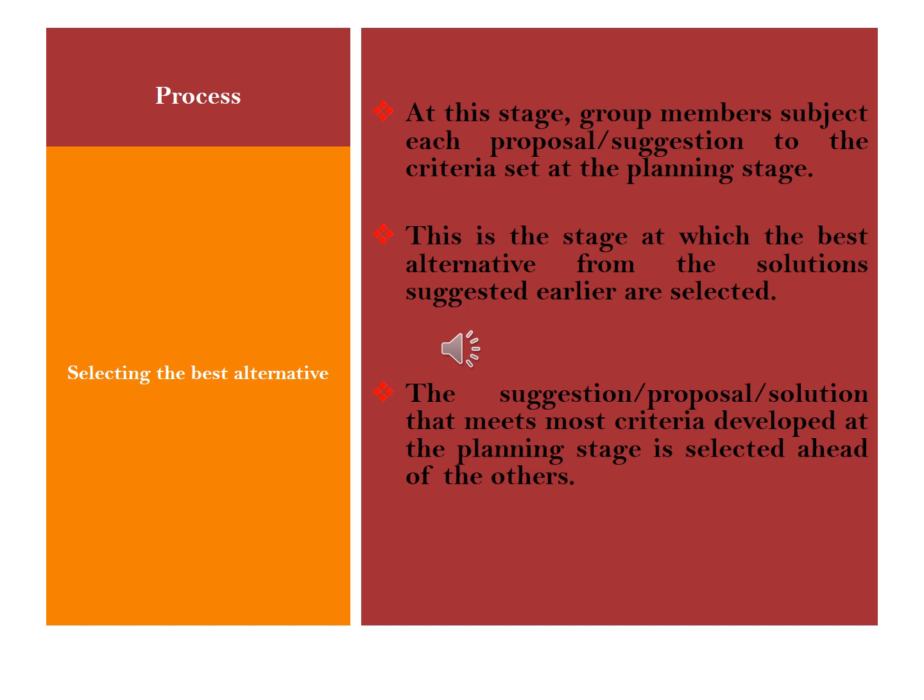It is important that the alternative picked has not only the approval of members but also meets certain criteria in terms of cost — how much the group is going to spend in sorting out a problem using the chosen alternative. It is also important for the group to look at whether the course of action being adopted best fits the objectives, values, and goals, as it is not morally correct to pick an alternative that appears to be against the objectives, values, and goals of the organization.